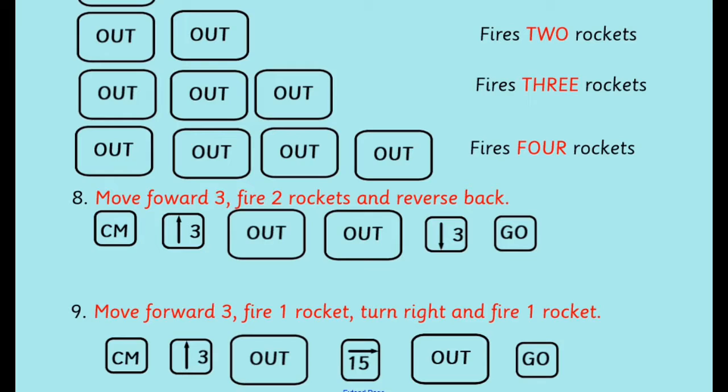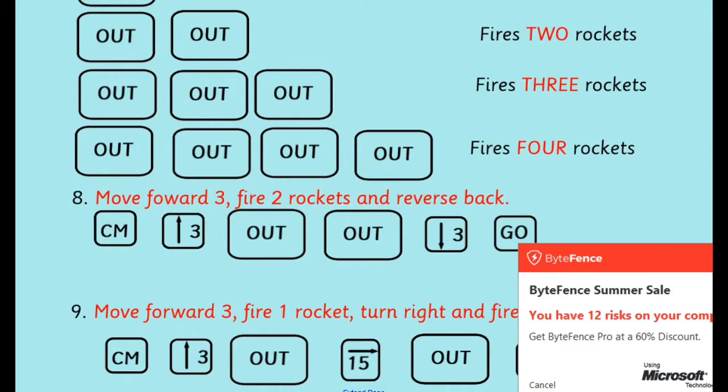In this last program, Big Track moves forward three, fires one rocket, turns right, and fires one rocket. So we've got CM again, forward three, OUT one rocket, turn right - that's right 15, OUT one rocket, and then go.